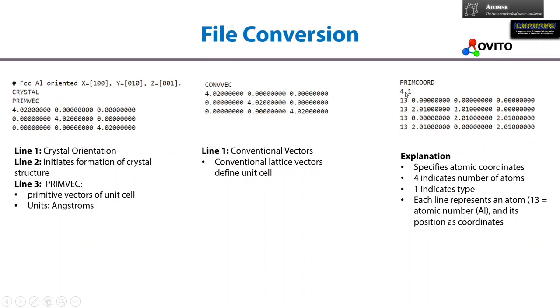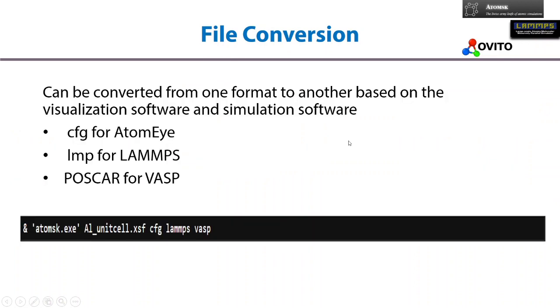At the first line we find four and one. Four means there are four atoms, and one means the ID type is one. From the second line we find the number 13, which means atomic number 13, and the subsequent columns represent the coordinates of the atoms. For the first atom the coordinates are zero, zero, zero, and for the second atom the coordinates are two, two, two.